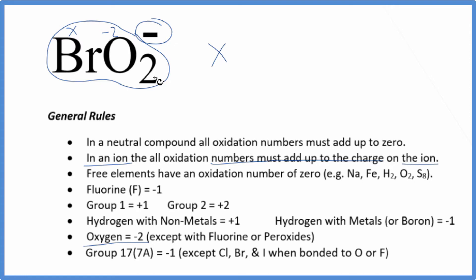X minus two times two, that's minus four. And we said it's an ion, so they all add up to the charge on the ion. So everything's going to equal minus one.